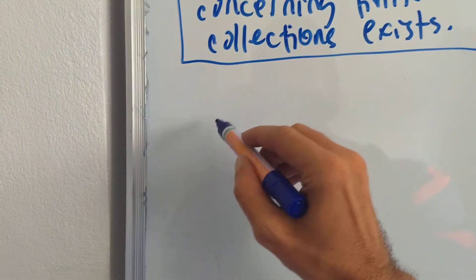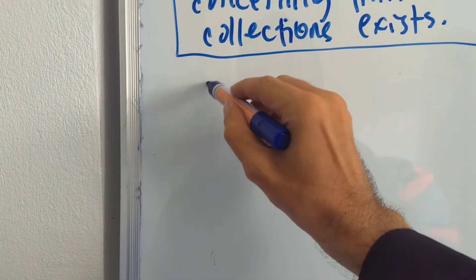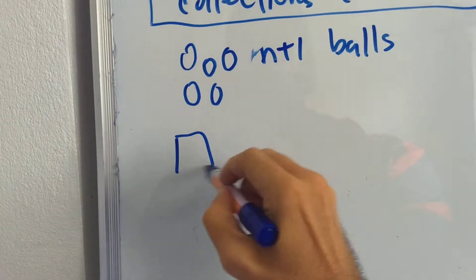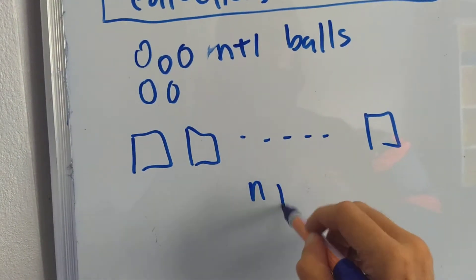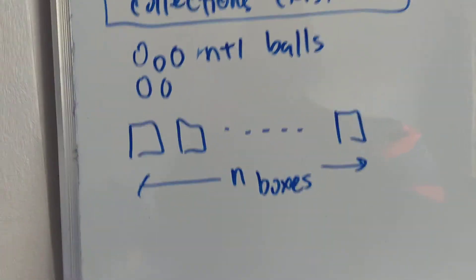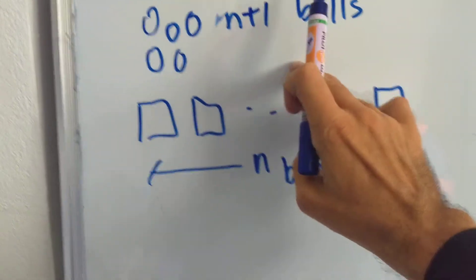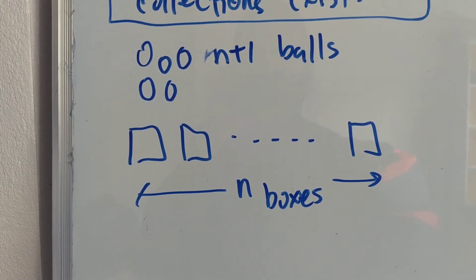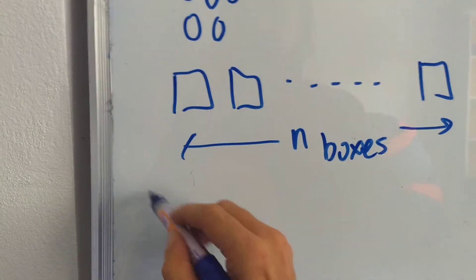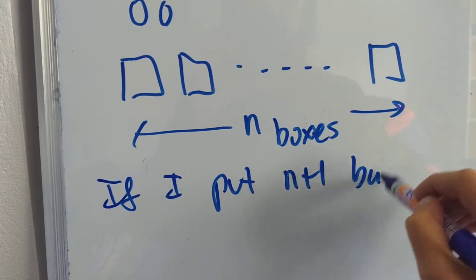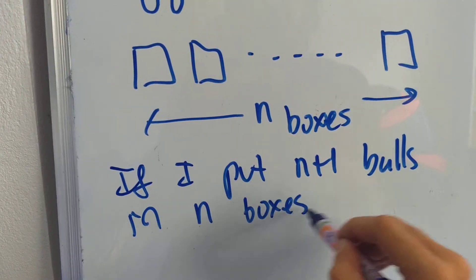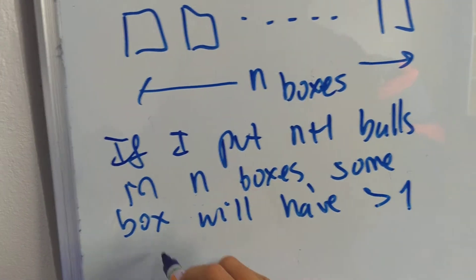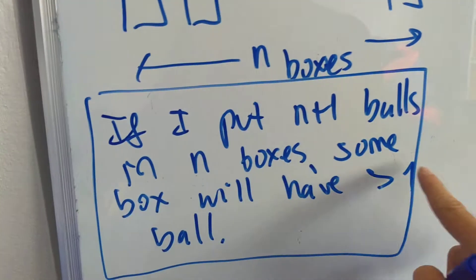We're going to look at the most basic form today. It's usually phrased in terms of pigeons and holes, but I'm going to use balls. So I have n+1 balls and n boxes — balls and boxes are easier to draw than pigeons. If I try to put these balls in the boxes, I won't be able to do that without having one box containing two or more balls. So if I put n+1 balls in n boxes, some box will have more than one ball. That's the most basic form of Dirichlet's principle.